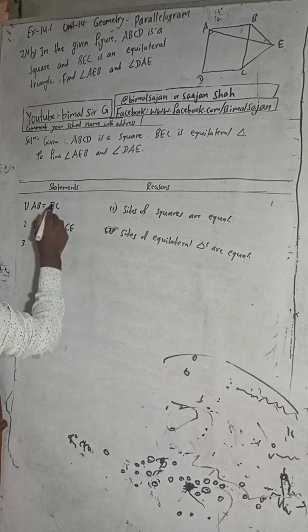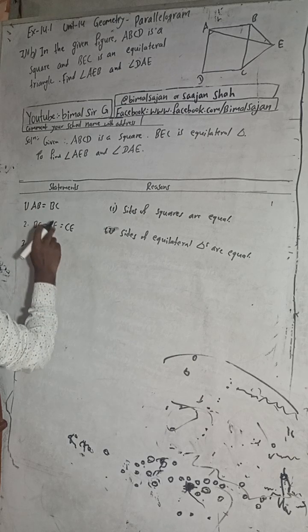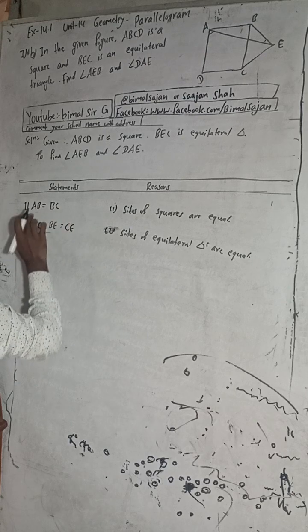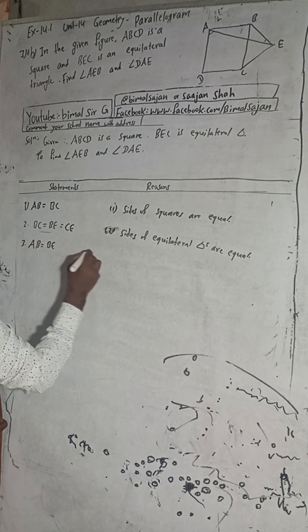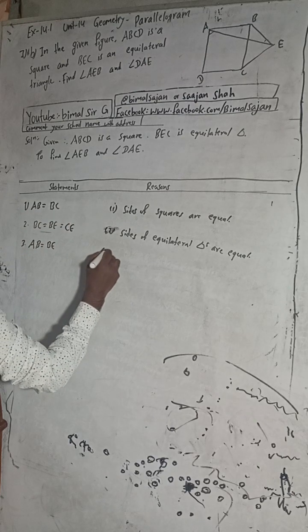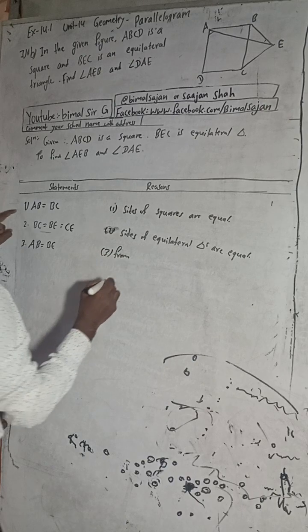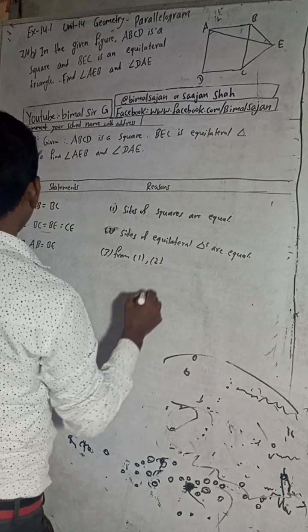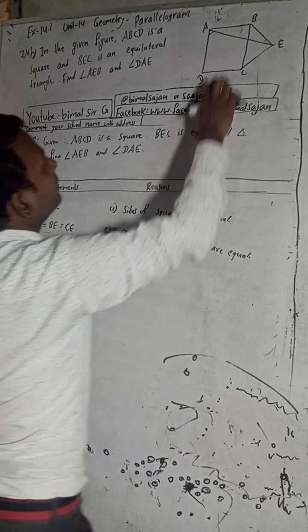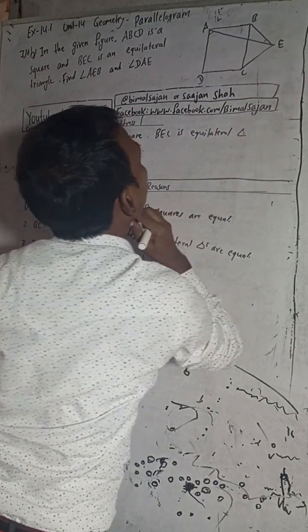From steps 1 and 2, since AB equals BC and BC equals BE, we get AB equals BE. This is step 3.